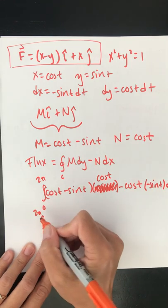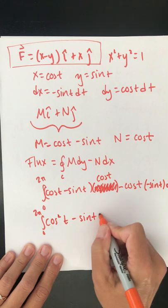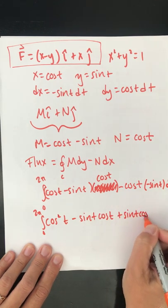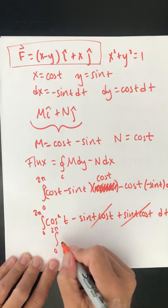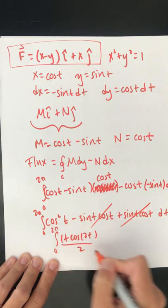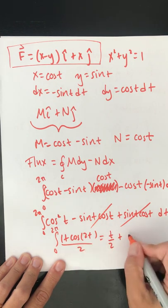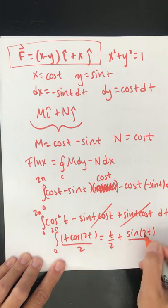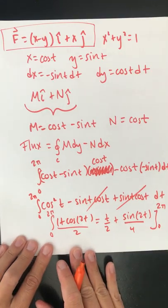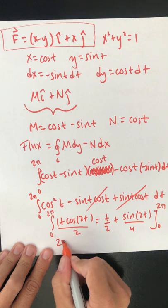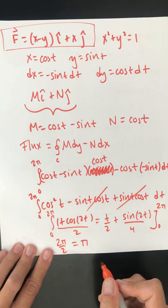So let's clean that up. So I get cosine squared t minus sine t cosine t plus sine t cosine t dt. This turns into 1 plus cosine of 2t over 2, which is 1 half. So t over 2 plus sine of 2t over 4, and I'm going to evaluate that from 0 to 2 pi. And I get 2 pi over 2 plus 0 minus 0 minus 0, which is pi.